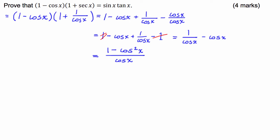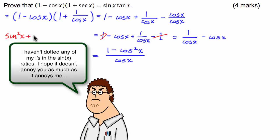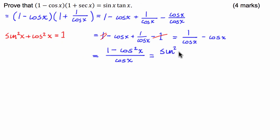So hopefully you guys are aware that this 1 minus cosine squared of x, using the Pythagorean identity, is equal to sine squared of x. So we're using the identity sine squared x plus cos squared x is equal to 1. So 1 minus cos squared x will equal sine squared x. So we're going to use that to rearrange that numerator to sine squared x.